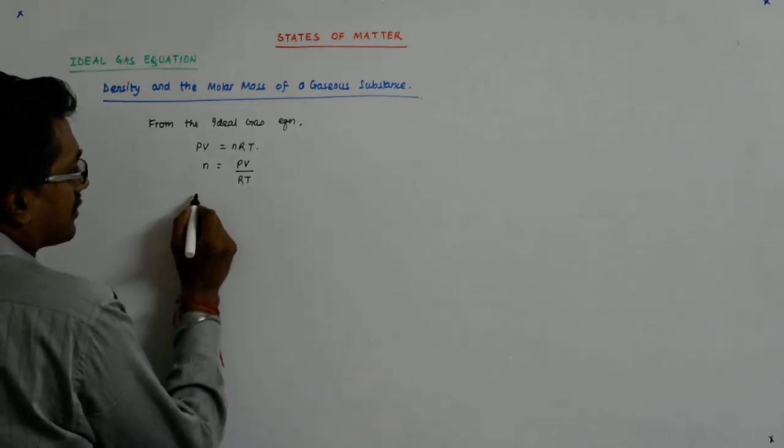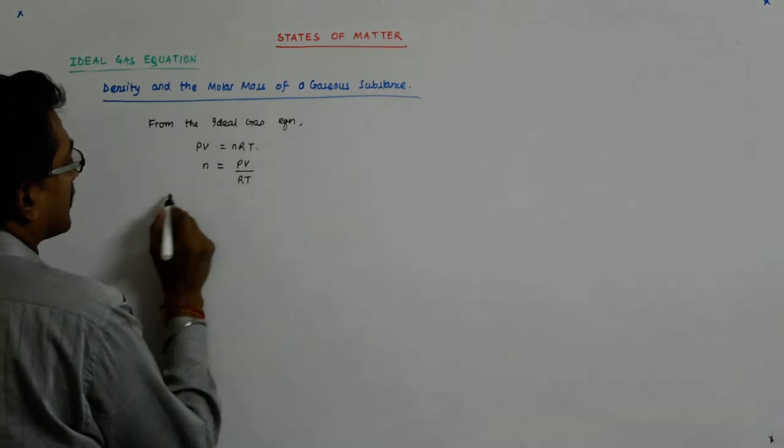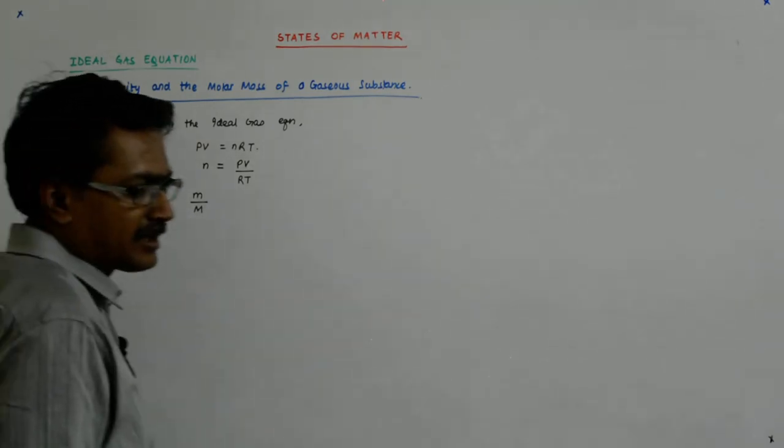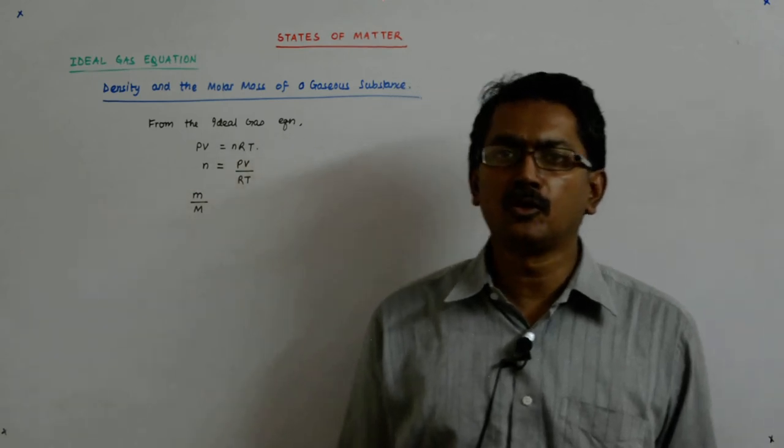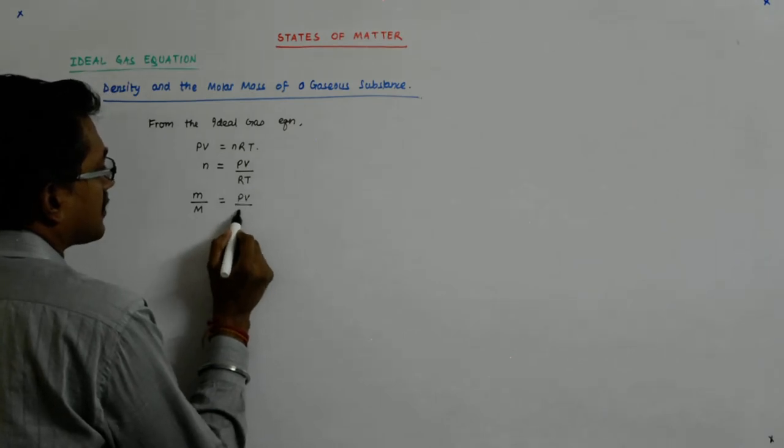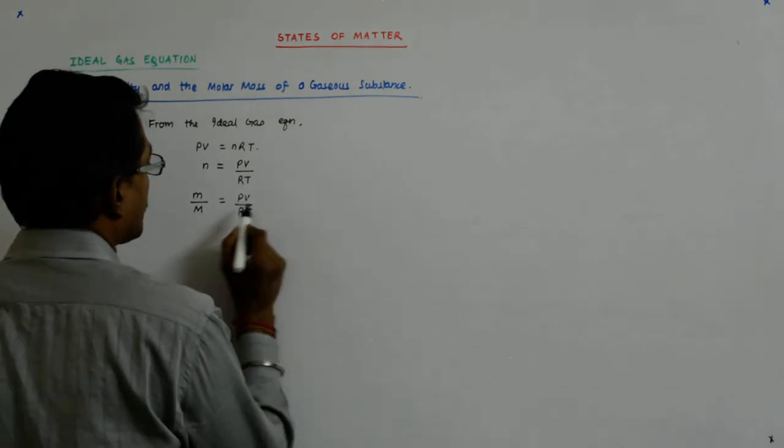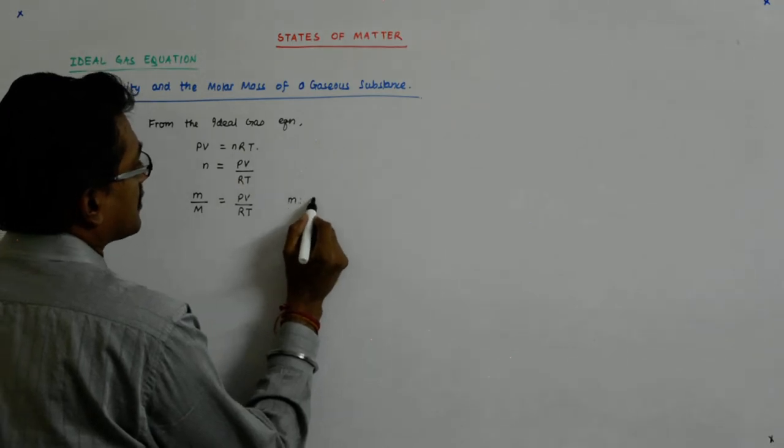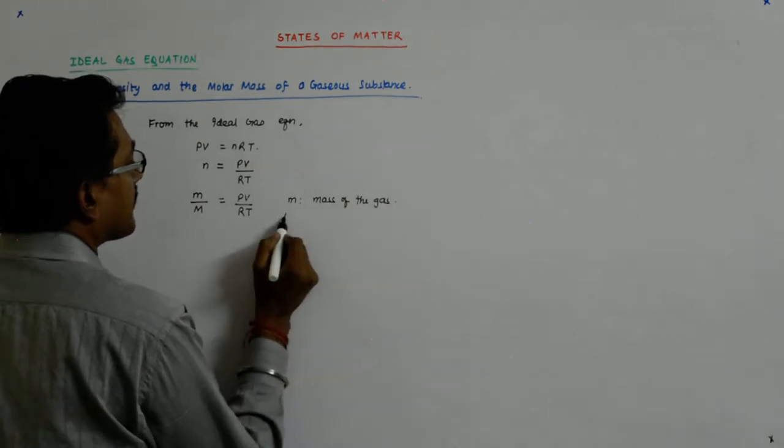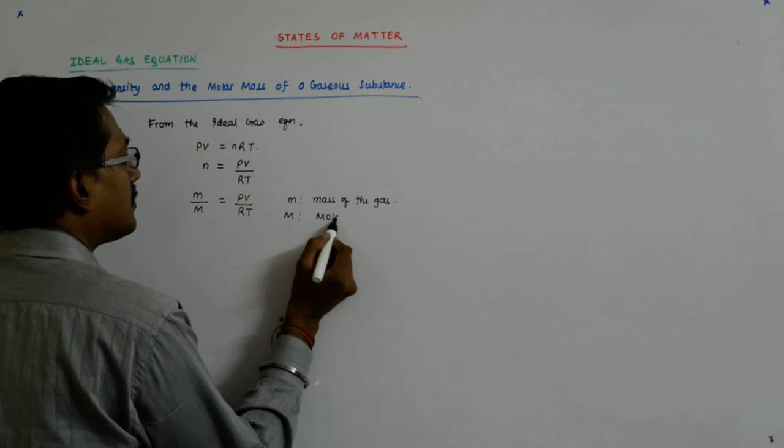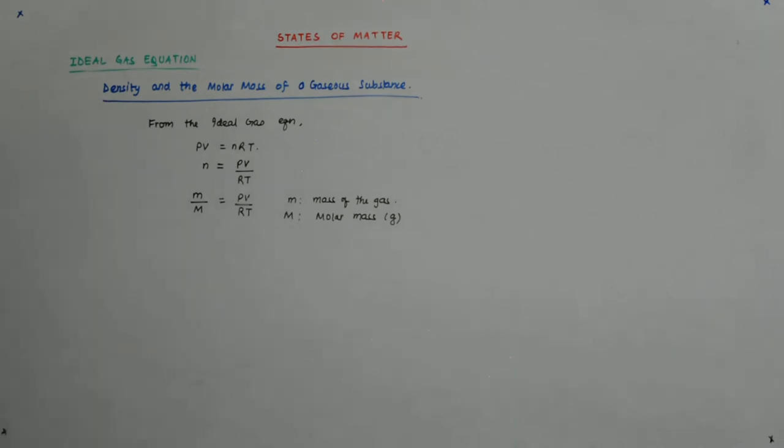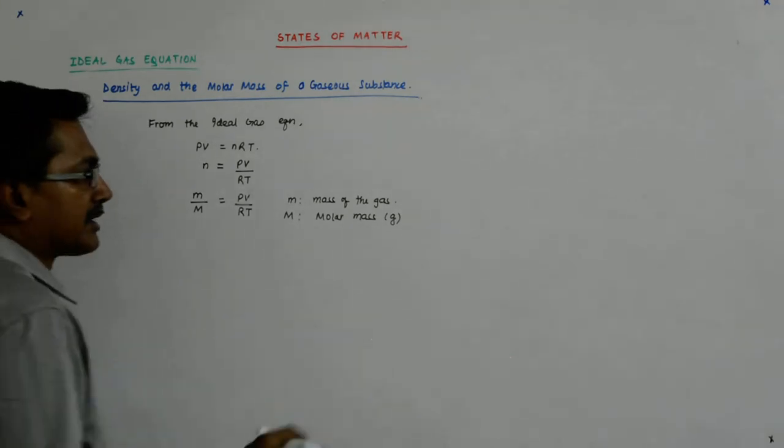Now what is n? If I convert it into mass and the molar mass, then what do I do to get the number of moles? n is equal to m upon M. m is the mass of the gas and M is the molar mass, which is normally specified in grams.